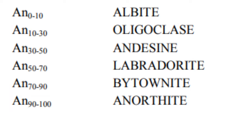Individual plagioclase feldspars are given specific names. These names are expressed in terms of the percentage of anorthite end-member. Albite, which is the sodium-rich end-member of plagioclase occurring at low temperatures of about 1,118 degrees Celsius, has an anorthite composition between 0 and 10. Oligoclase has an anorthite composition between 10 and 30.